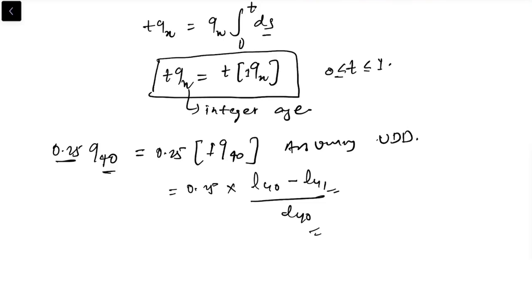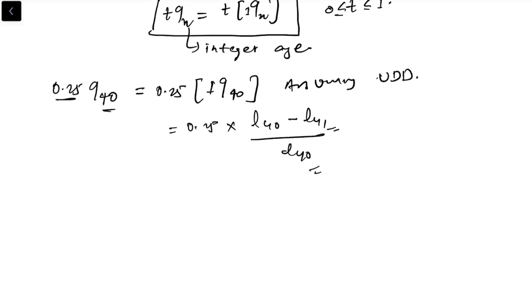Let's do another example. Suppose you are given 2.25 q40. Here you can see that t is not between 0 and 1, but x is the integer age. So let's first convert this to p form, that is 1 minus 2.25 p40. Now we can break this down using the principle of consistency so that this t becomes lower and lies between 0 and 1.